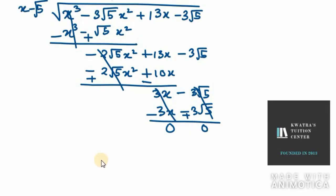Now we need to find the factors of the quotient x² minus 2√5 x plus 3 using middle term splitting. However, the factors of 3 are 3 and 1, and we cannot split these to get 2√5. So we need to use another method — the square root method.